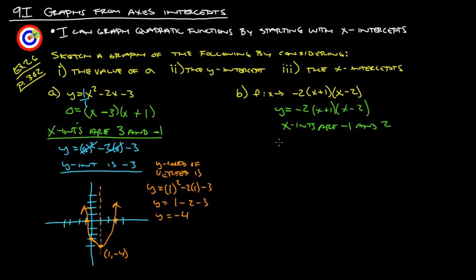We're looking for the y-intercept. y equals negative 2 times 0 plus 1, and 0 minus 2. So that's negative 2 times 1 times negative 2. So the y-intercept is at 4. And we already found our x-intercepts, so we're going to go through and graph this thing.